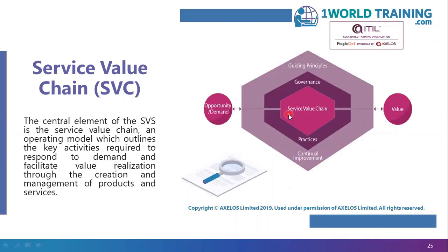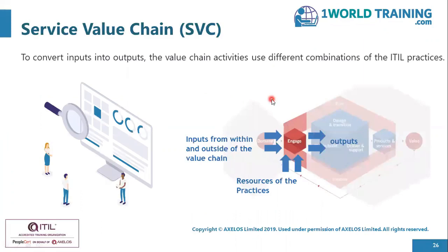At the center of the service value system, or the SVS, we can see the service value chain. The service value chain is an operating model which outlines the key activities required to respond to demand and facilitate value realization through the creation and management of products and services. The service value chain contains several value chain activities. These value chain activities use the practices — one or more practices — to convert inputs and transform them into outputs.